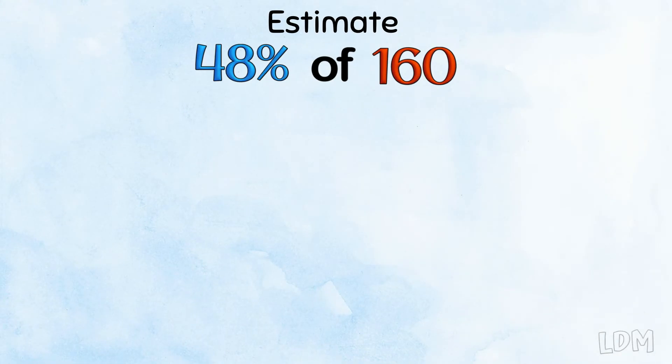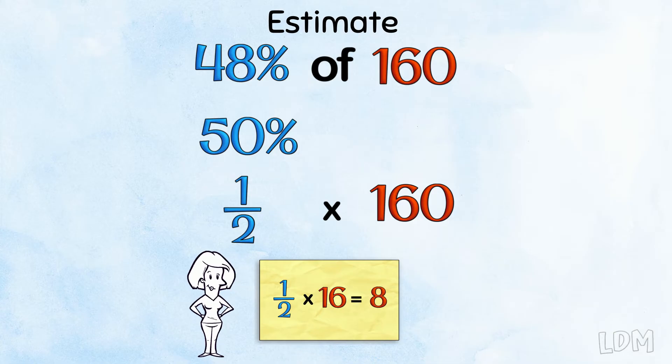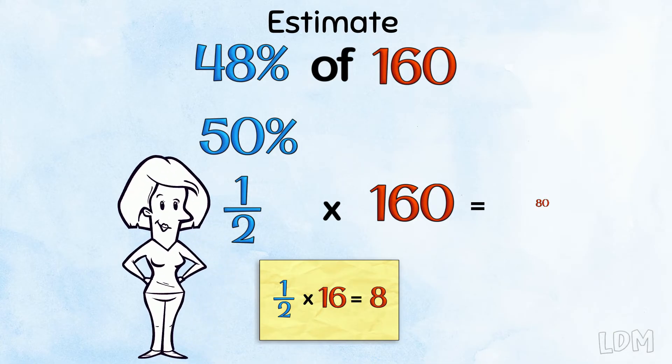48% rounds up to 50%. We want 1 half of 160. 1 half of 16 is 8. 1 half of 160 is 80.